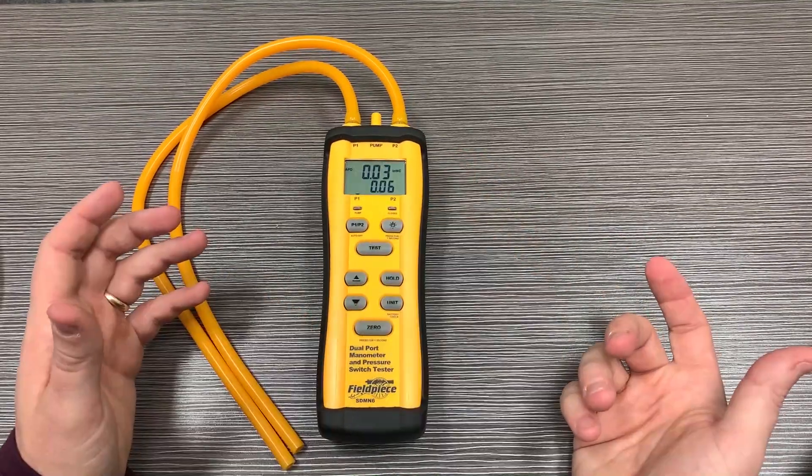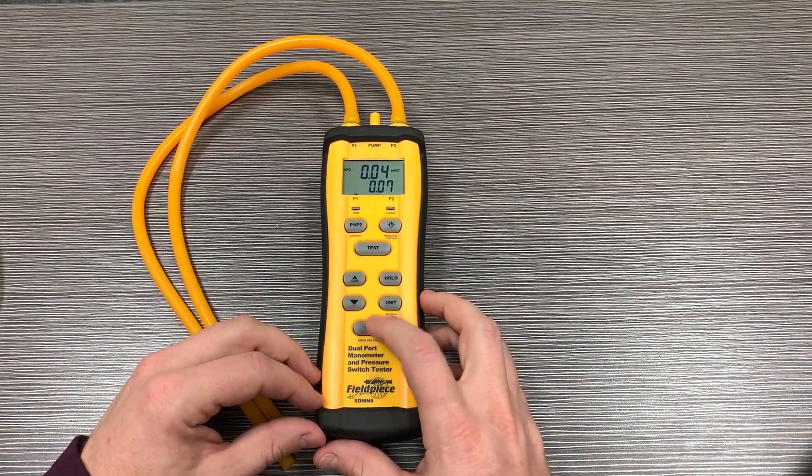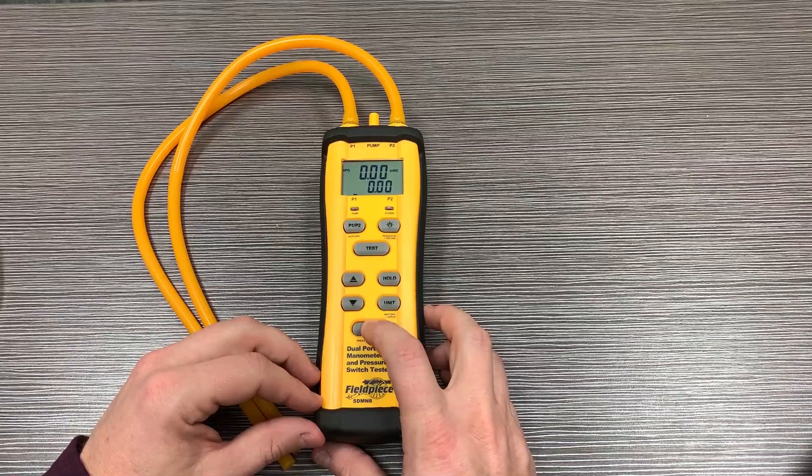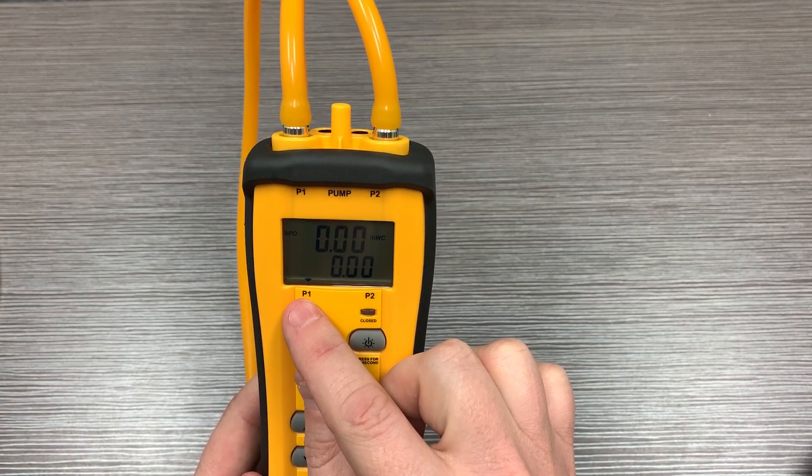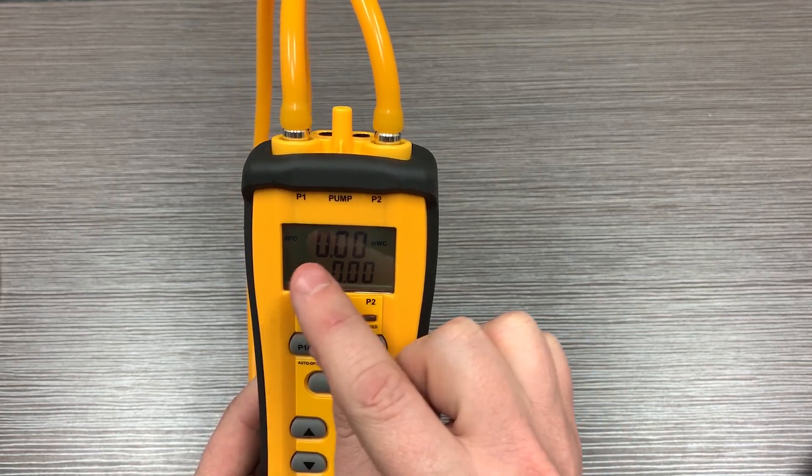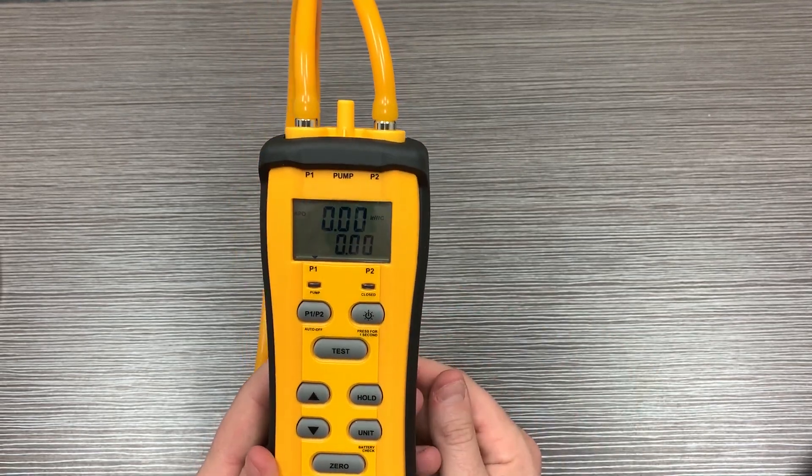First, let's turn it on. Once we get it turned on, we're going to zero it. In this case, you just hold zero for one second and it's going to zero out. Right now you can see we have the arrow here pointing at P1, and what that means is that this big number up here is representing P1.